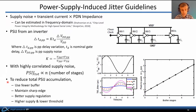This gives rise to design guidelines for reducing total PSIJ accumulation. First, use fewer buffers, since total PSIJ is proportional to n. Second, maintain sharp edges, because PSIJ of each inverter is proportional to its delay time. Third, ensure the supply is tightly regulated so ΔVdd is small. Fourth, to the extent possible, maintain a large difference between Vdd and the threshold voltage of the constituent transistors, although that may be governed by the CMOS technology.